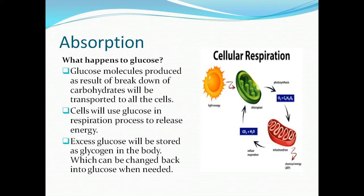In the previous class we learnt that digestion completes in the small intestine and that digested food through porous walls enters the blood supply. The blood then transports digested food to the liver, and the liver transports these nutrients to the places where they will be used. Glucose obtained as a result of breakdown of carbohydrates is transported to all the cells of the body, where it is used in the respiration process to release energy. This glucose is the main source of fuel for the cells, and there is a constant supply of glucose always available in the blood.